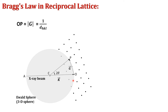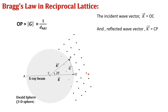The incident wave vector is represented by vector k, that is OC, and the reflected or scattered wave vector is k' = CP. Here k' and k are related by the relation k' = k + G. This relation shows that scattering changes only the direction of k; k is the incident wave vector and k' is the scattered wave vector, which differs from the incident wave by a reciprocal lattice vector G.